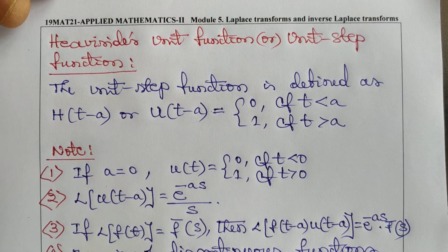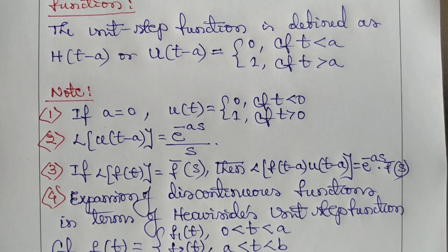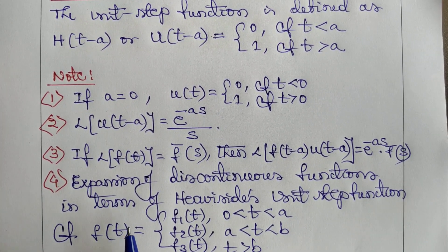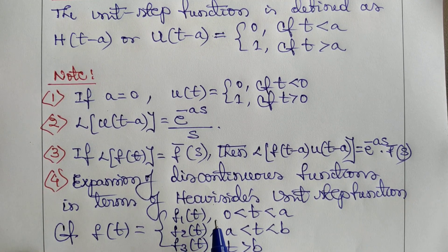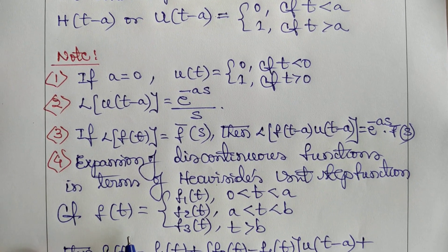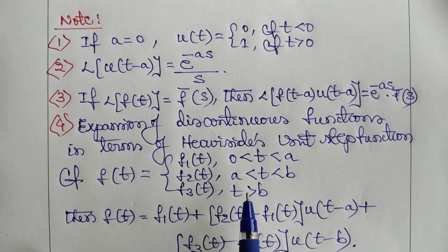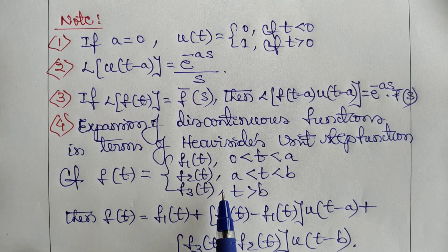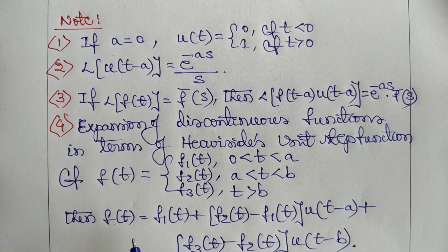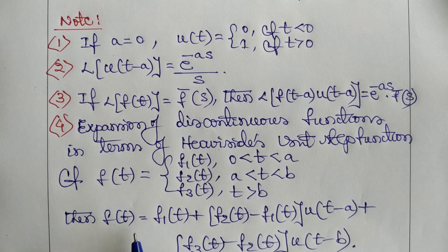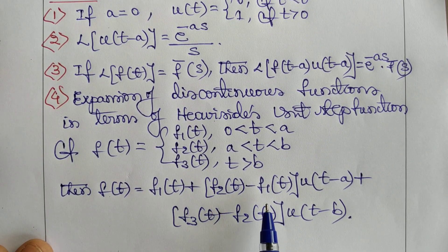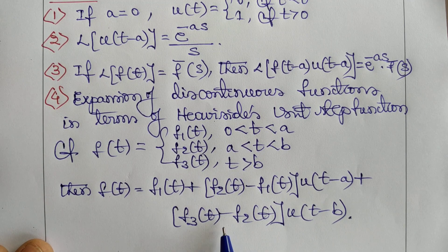Note 4: Expansion of discontinuous functions in terms of Heaviside's unit step function. If f(t) = f₁(t) for 0 < t < a, f₂(t) for a < t < b, and f₃(t) for t > b, then f(t) can be written as: f₁(t) + [f₂(t) - f₁(t)]·u(t - a) + [f₃(t) - f₂(t)]·u(t - b).